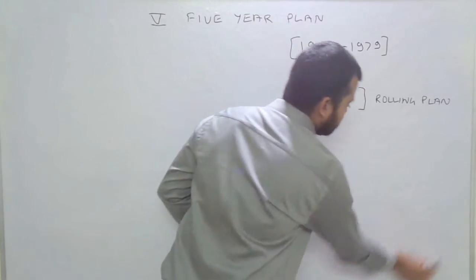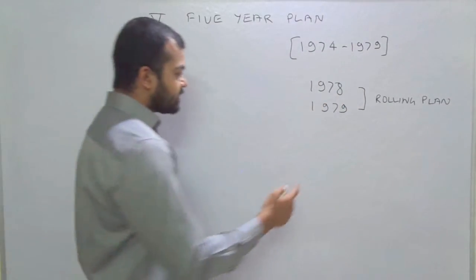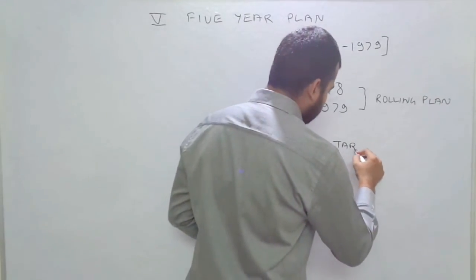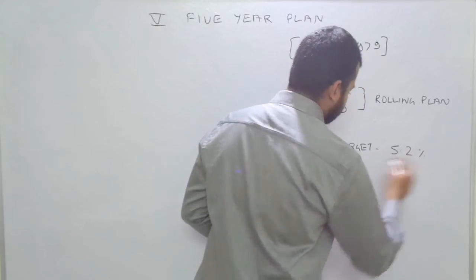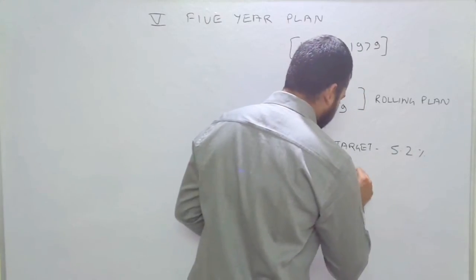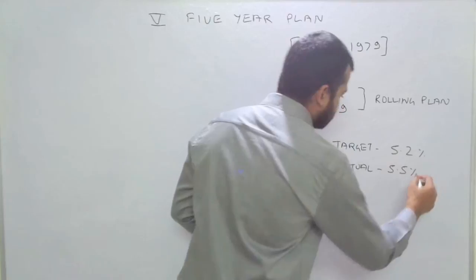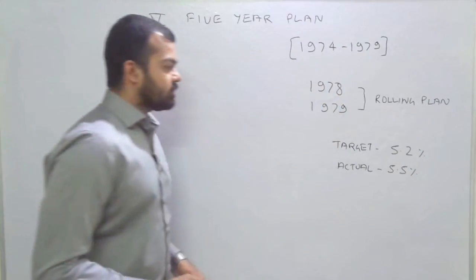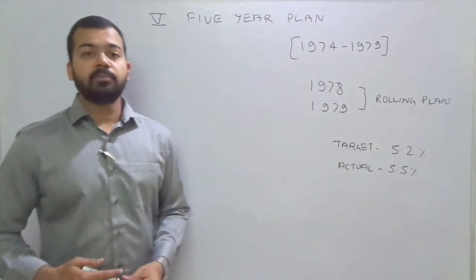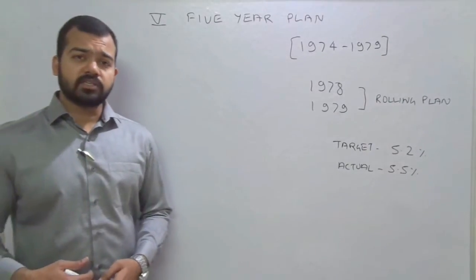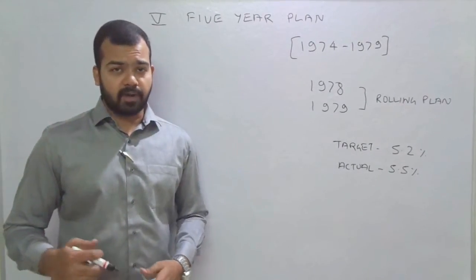Now we consider the target growth rate. The target growth rate was 5.2%, and the actual growth rate achieved by the Indian economy in this Five Year Plan period was 5.5%. This means the plan was relatively successful in comparison to the previous Five Year Plans.